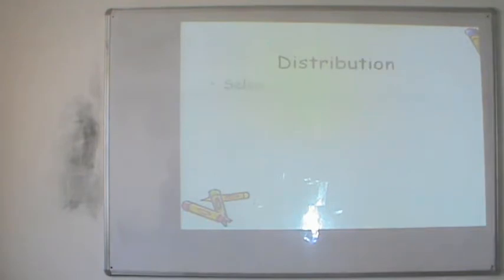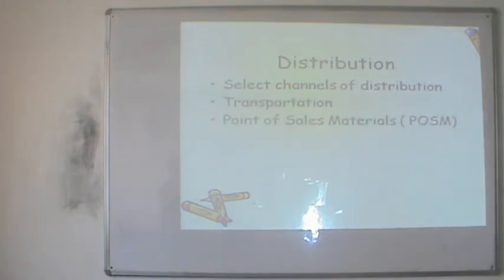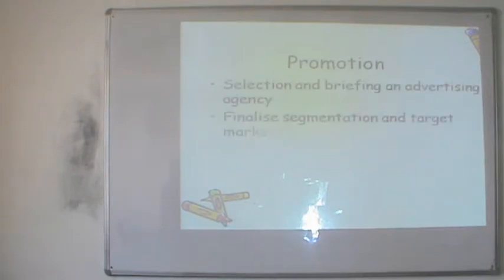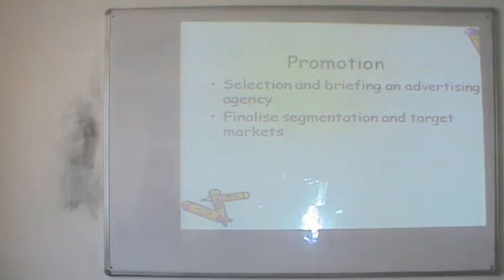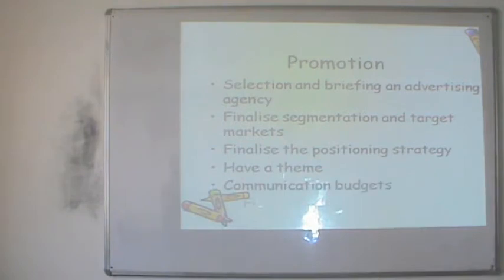For distribution, the company selects channel partners, discusses transportation and logistics, and identifies point-of-sale materials. For promotion — the fourth P — the company selects and develops an advertising campaign, possibly involving an advertising agency, finalises target market segments and positioning statements, selects communication themes, decides on budgets, and finalises the advertising and promotion plan.